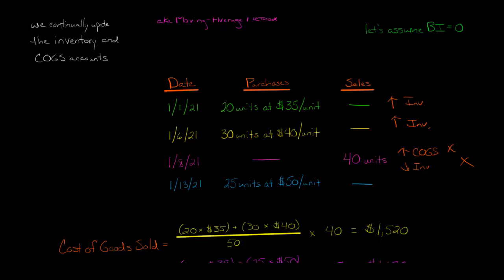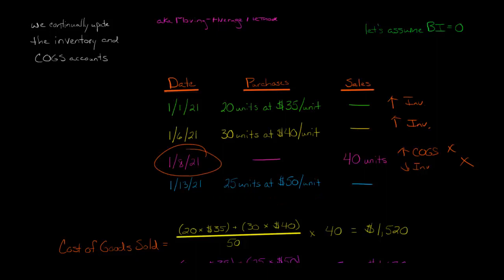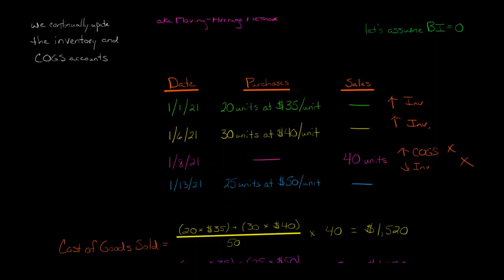Notice we ignore the inventory purchased on January 13th for the time being. Why? Because as of January 8th, that hasn't happened yet. We're making a journal entry on January 8th — we don't even know what's going to happen on January 13th or anything going forward. So that's not going to factor into our average cost. Our average cost comes out to $38 a unit.